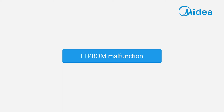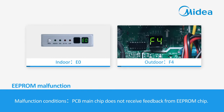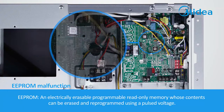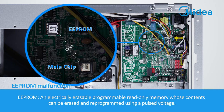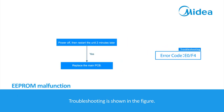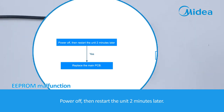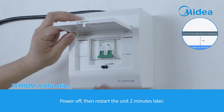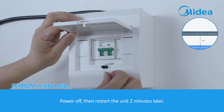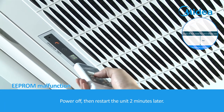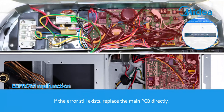EEPROM malfunction. Malfunction condition: the PCB main chip does not receive feedback from the EEPROM chip. EEPROM is an electrically erasable, programmable, read-only memory whose contents can be erased and reprogrammed using a pulsed voltage. Troubleshooting: power off, then restart the unit two minutes later. If the error still exists, replace the main PCB directly.